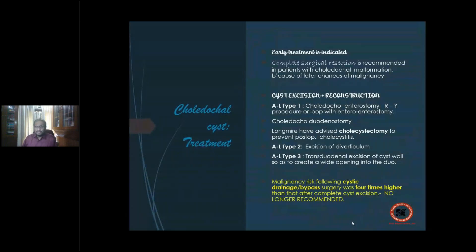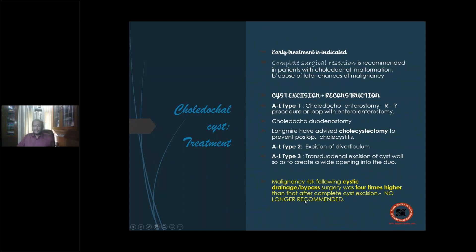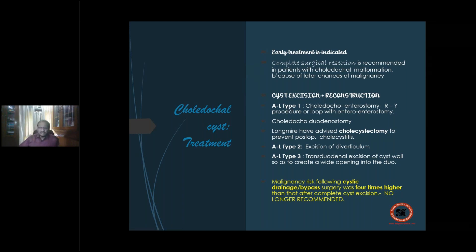Early treatment is indicated — complete surgical resection is the only treatment: complete cyst excision. Cyst bypass is no longer an option because doing a cystic bypass gives four times higher chances of malignancy. So there is only one method: cyst excision and reconstruction. For type 1 (Lilly/Lledge classification), a choledochoenterostomy with a Roux-en-Y procedure is performed.